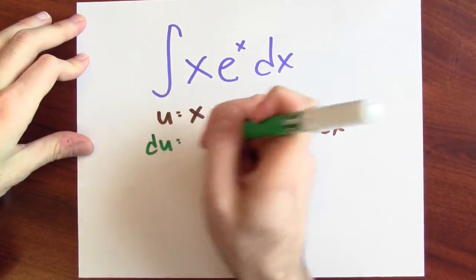Now, let's figure out du and v. If u is x, then du is dx.